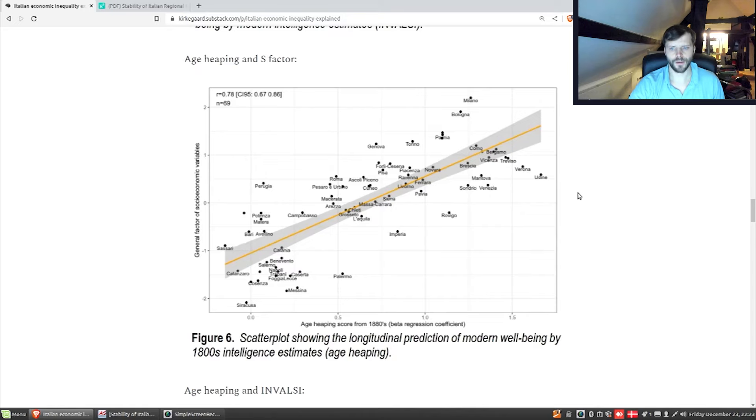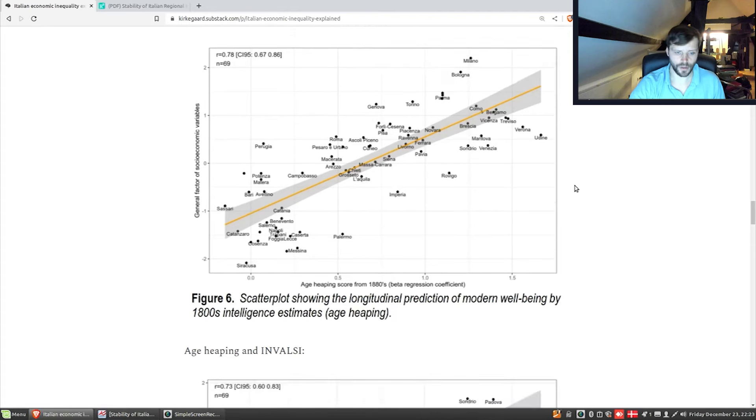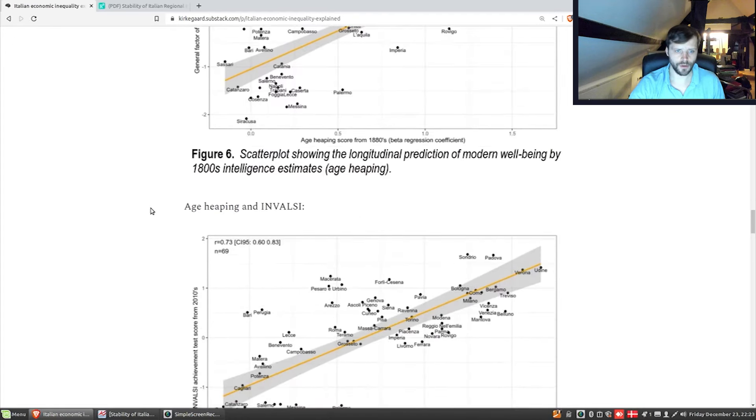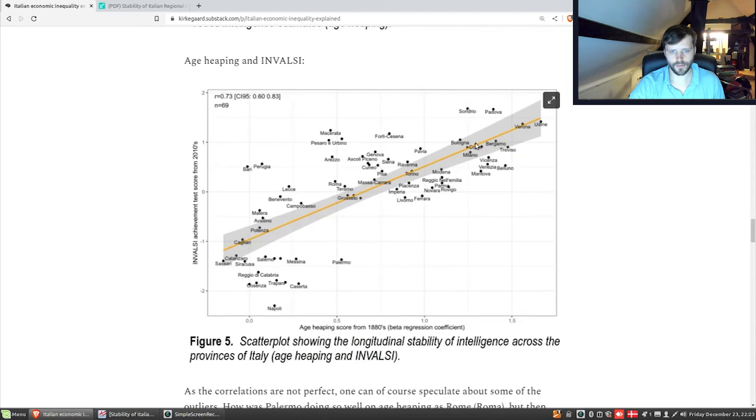There are some other outliers here, which I have no particular explanation for. As I recall, Imperia is some kind of coastal military thing. Who knows, maybe the recruits for the Navy were not particularly bright. Whatever the exact case, the association is pretty good. And finally, we can take the old cognitive estimates and the modern ones, which in fact correlate weaker than this one, only very slightly. We also get this very nice plot where there's some cluster of outliers up here. We could maybe speculate that these provinces were slightly faster in implementing public schooling, teaching the kids basic math, such that they were later as adults able to report their ages more accurately. Whatever the exact case, the association is pretty good considering the data limitations.